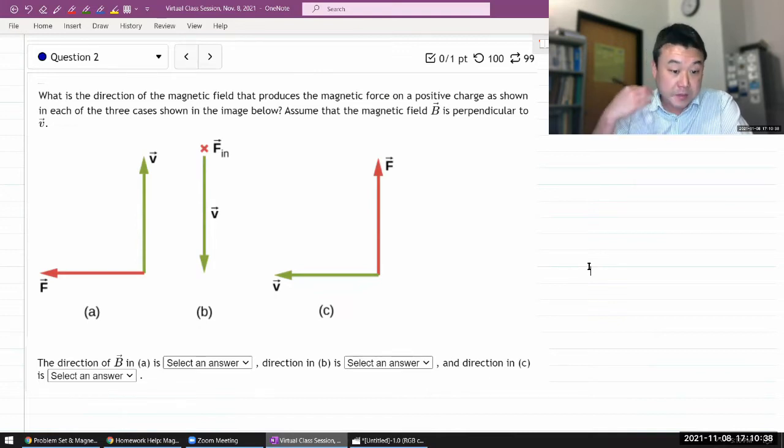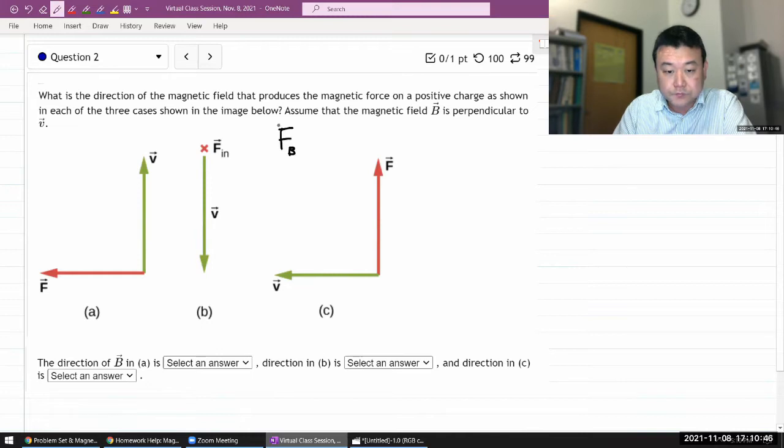And it's using the same magnetic force or Lorentz force expression, that magnetic force due to magnetic field on a moving charge is equal to charge times V cross B.